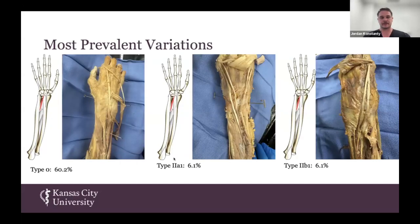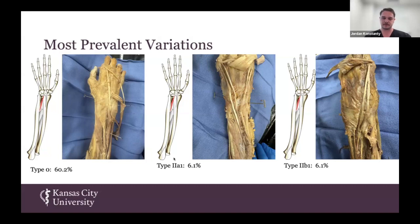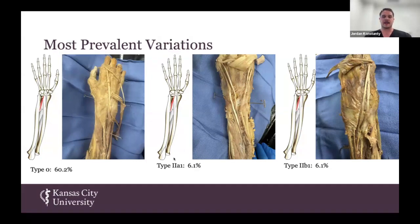I will discuss some of the more prevalent subtypes. Throughout our research, we found a total of 17 of the 29 subtypes in at least one donor on one side. Of the 17, these were the three most prevalent. Type 0 was found in about 60.2% of our samples — this is the classic morphology with one muscle belly and one tendon inserting onto the ulnar side of the extensor digitorum. Type 2A1 and type 2B1 were both found in about 6.1% of samples. Type 2A1 exhibits the classic tendon plus an accessory tendon inserting onto the radial side of the extensor digitorum tendon, while type 2B1 has the classic tendon plus an accessory tendon inserting onto the same ulnar-side spot.